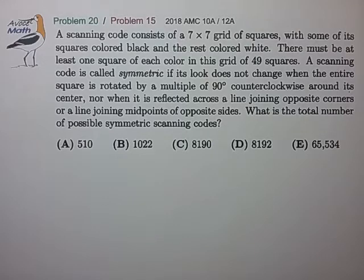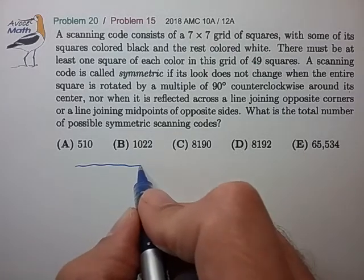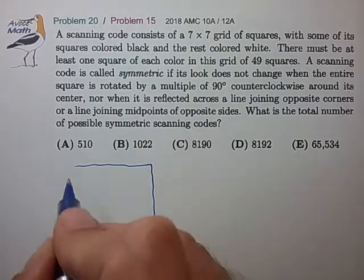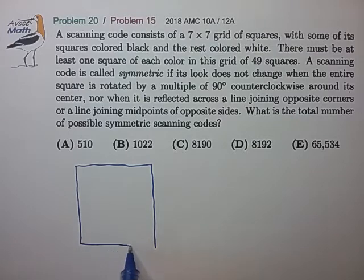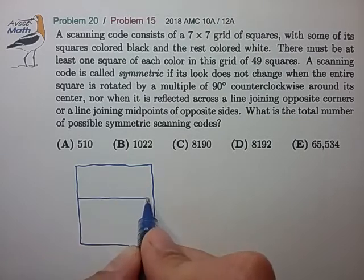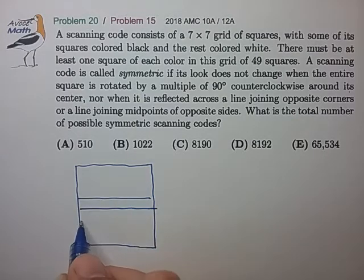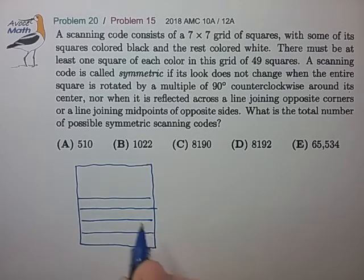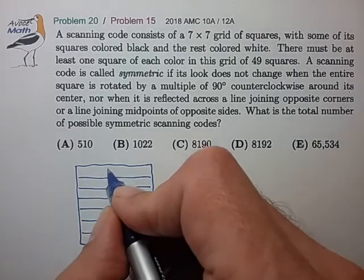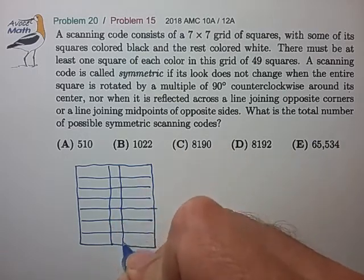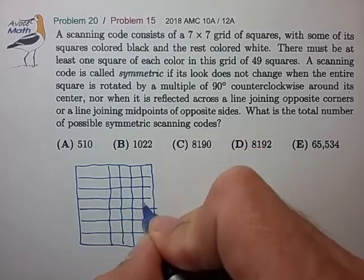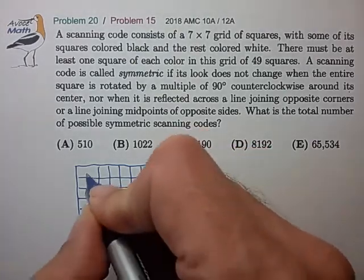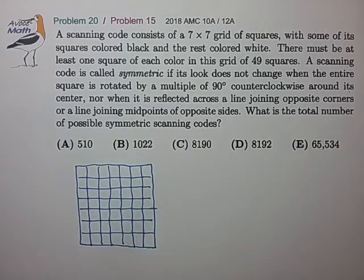Oh boy, what a mouthful. Let me start by drawing what I think this scan tag looks like. It seems to be a square with seven rows and seven columns. Okay, that looks pretty good.